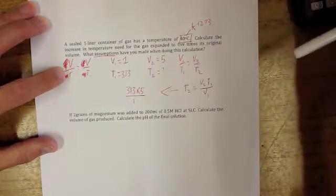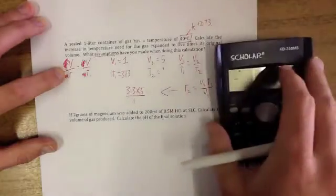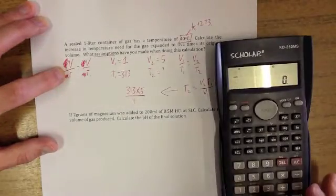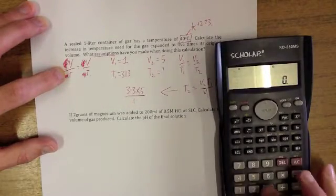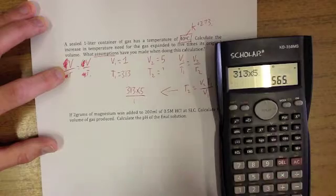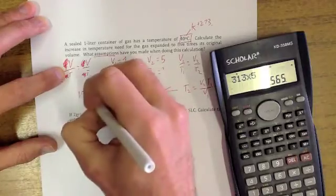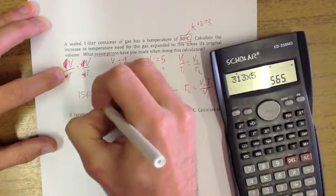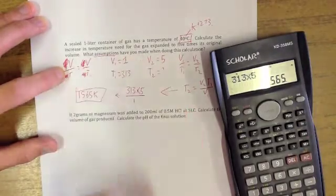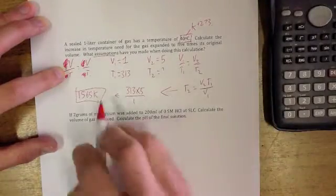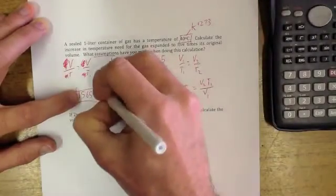is 313 Kelvin times 5 divided by our volume which is 1. So therefore, our change, our final temperature which is 313 times 5 is going to be 1565 Kelvin. This is our final temperature. This is what T2 is.